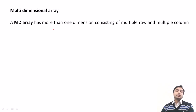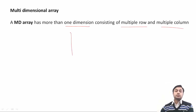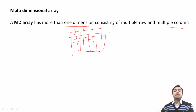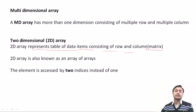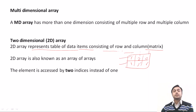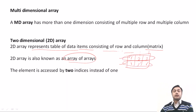In a multidimensional array, it has more than one dimension — consisting of multiple rows and multiple columns. The two-dimensional array represents a table of items consisting of rows and columns, which is known as a matrix. In a matrix, values like 1, 2, 3, 4, 5, 6 can be stored across a first row and second row with three columns. A 2D array is known as an array of arrays.